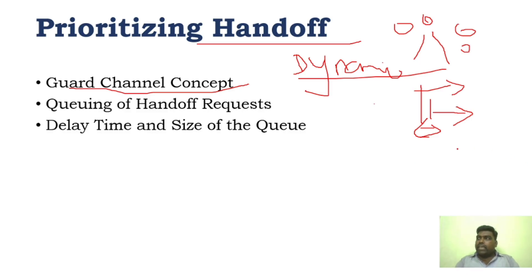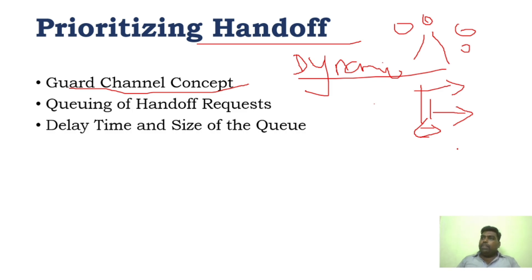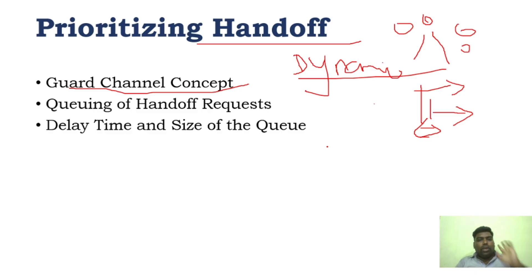Queuing is possible: first request, second request, based upon the time between the threshold and the minimum signal level. But once the minimum signal quality is reached, the call will get disconnected. Using the queuing concept, we cannot assure that the number of calls blocking is reduced. This is called prioritizing the handoff — the Guard Channel Concept and the queuing concept.